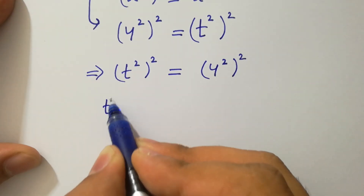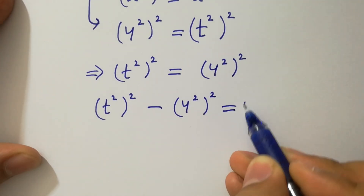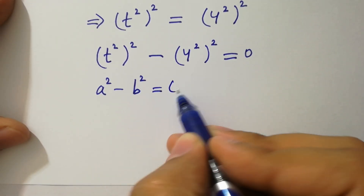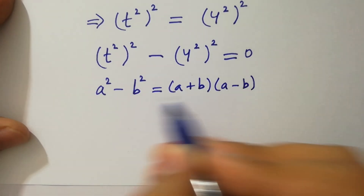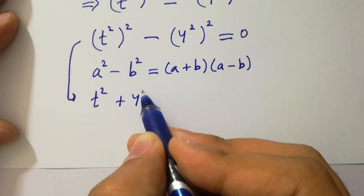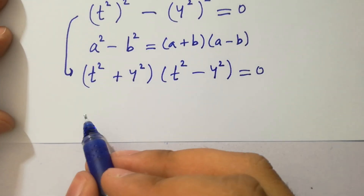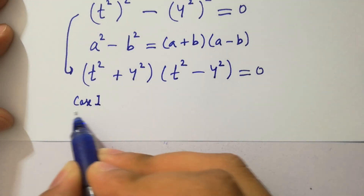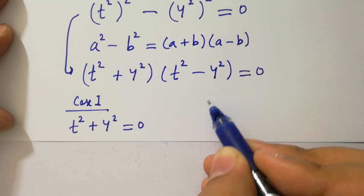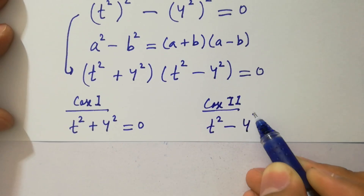This can be written as t squared to the whole power 2 minus 4 squared to the whole power 2 equals 0. Using the formula a squared minus b squared equals a plus b times a minus b, we get t squared plus 4 squared times t squared minus 4 squared equals 0. So we have two cases: first, t squared plus 4 squared equals 0; second, t squared minus 4 squared equals 0.